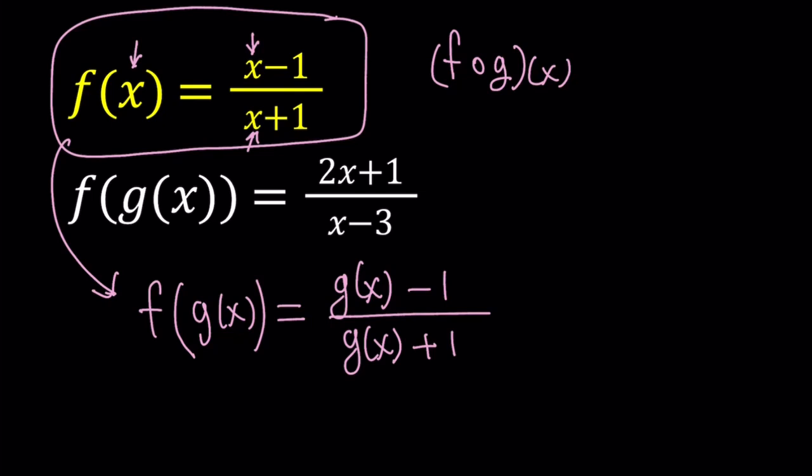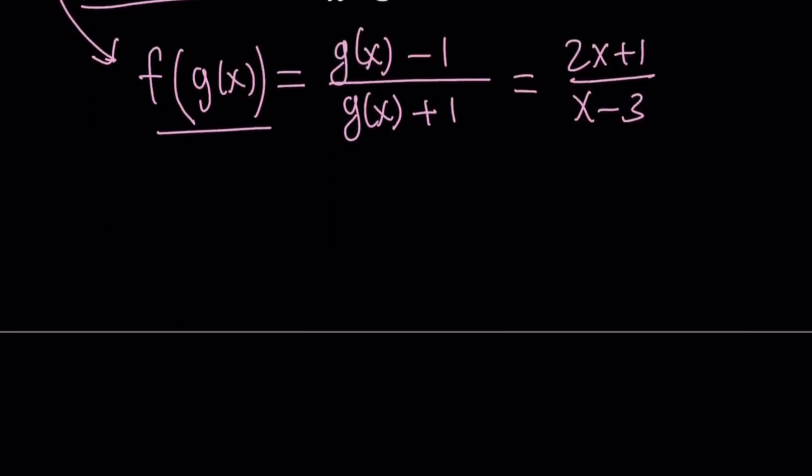Well, we do know f(g(x)). So let's go ahead and set this equal to 2x plus 1 over x minus 3, because these two things are the same. Make sense? Okay, great.